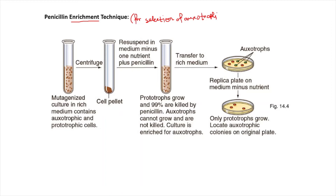Now let us see the protocol for this test. We take a test tube and the media that we use is called glucose salt broth. As you can see in this figure, this media contains both prototrophs as well as auxotrophs. We need to separate the auxotrophs from the prototrophs — our desired microbes are the auxotrophs.